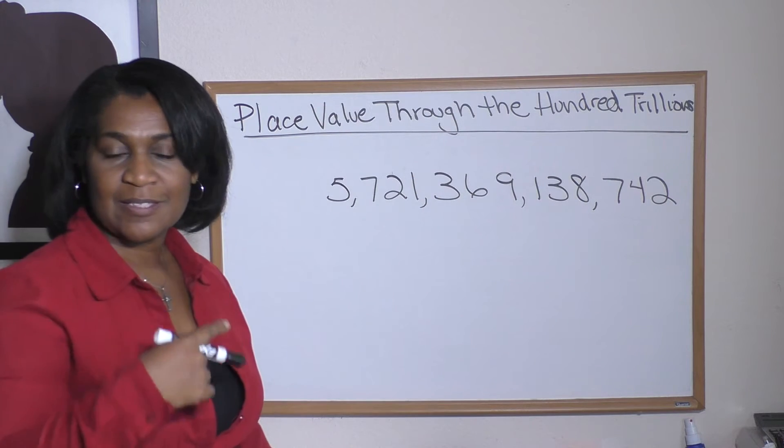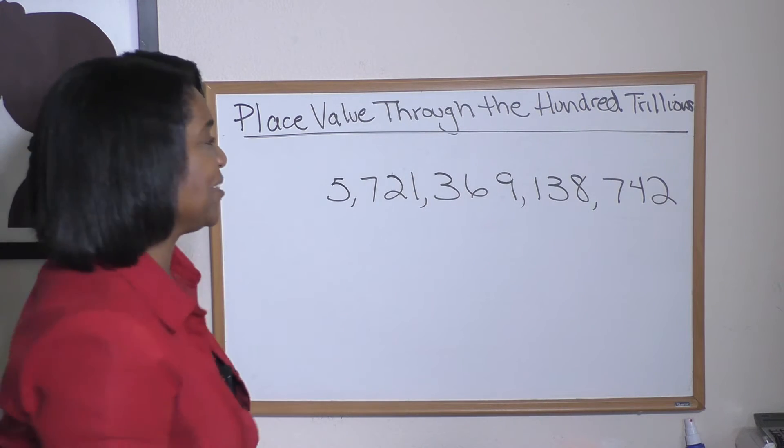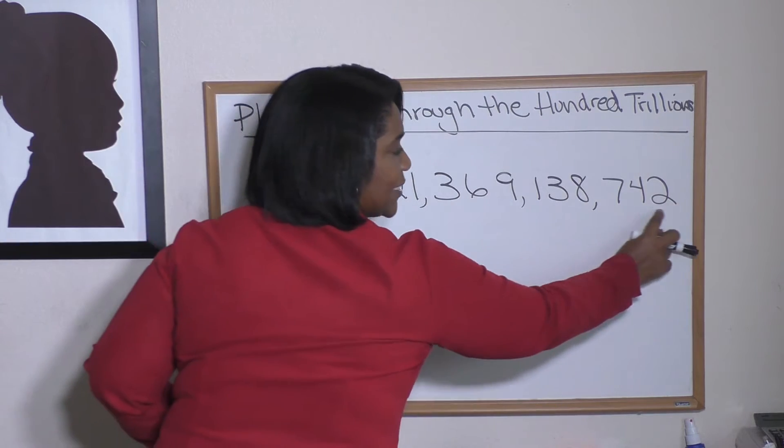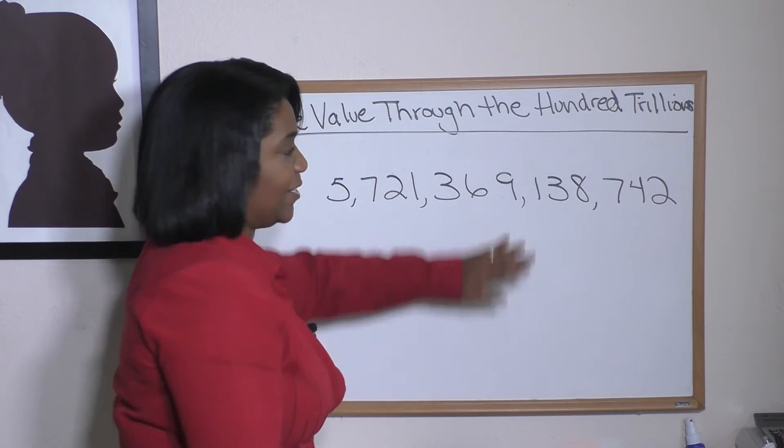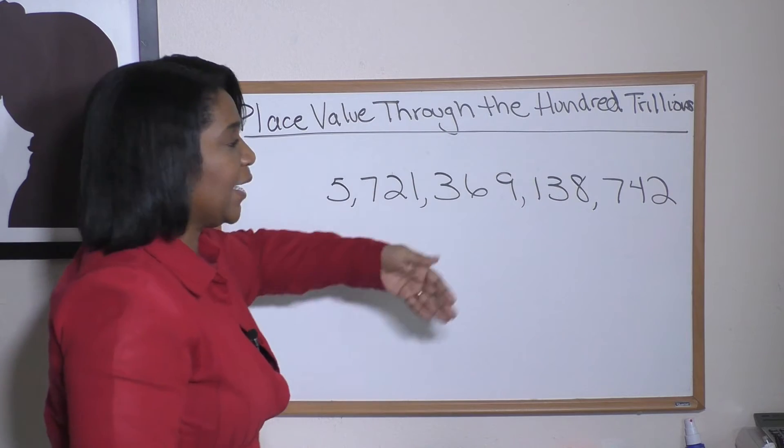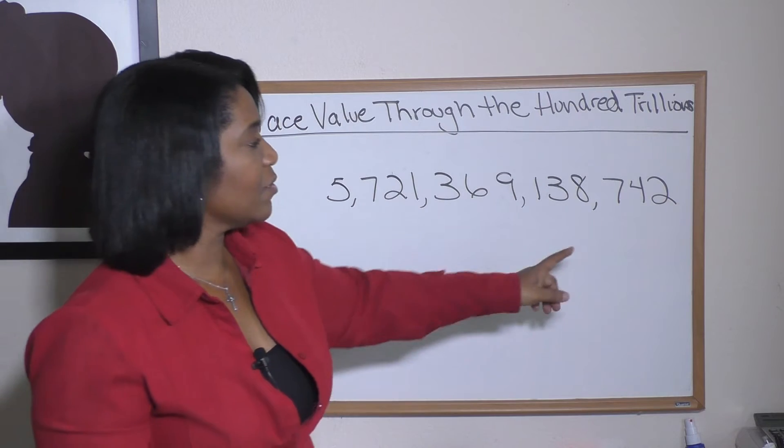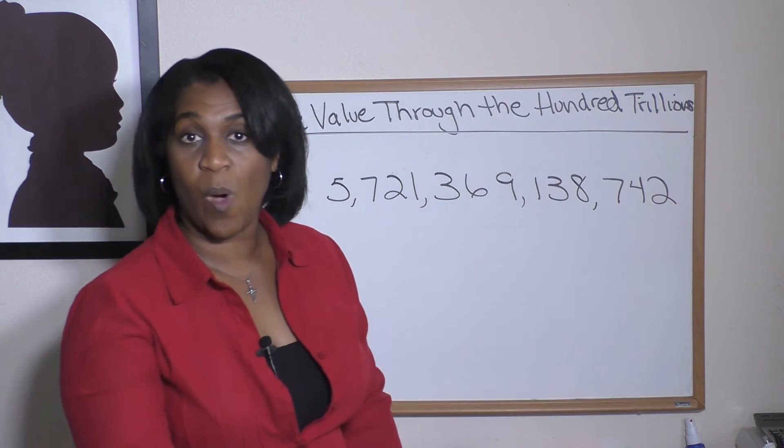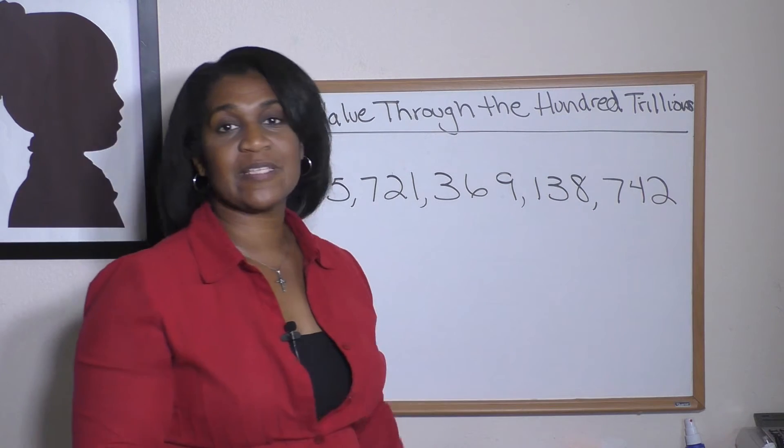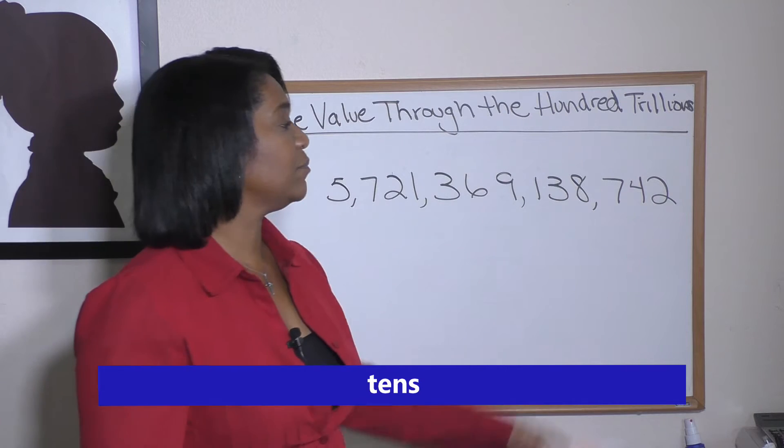Here's what I mean. So let's just first start by looking at this number 742 and pretend to block out the rest of it. Okay, we know 742. We know that number is 742. And also we know that the two is in the ones column, the four is in the tens column, the seven is in the hundreds column.